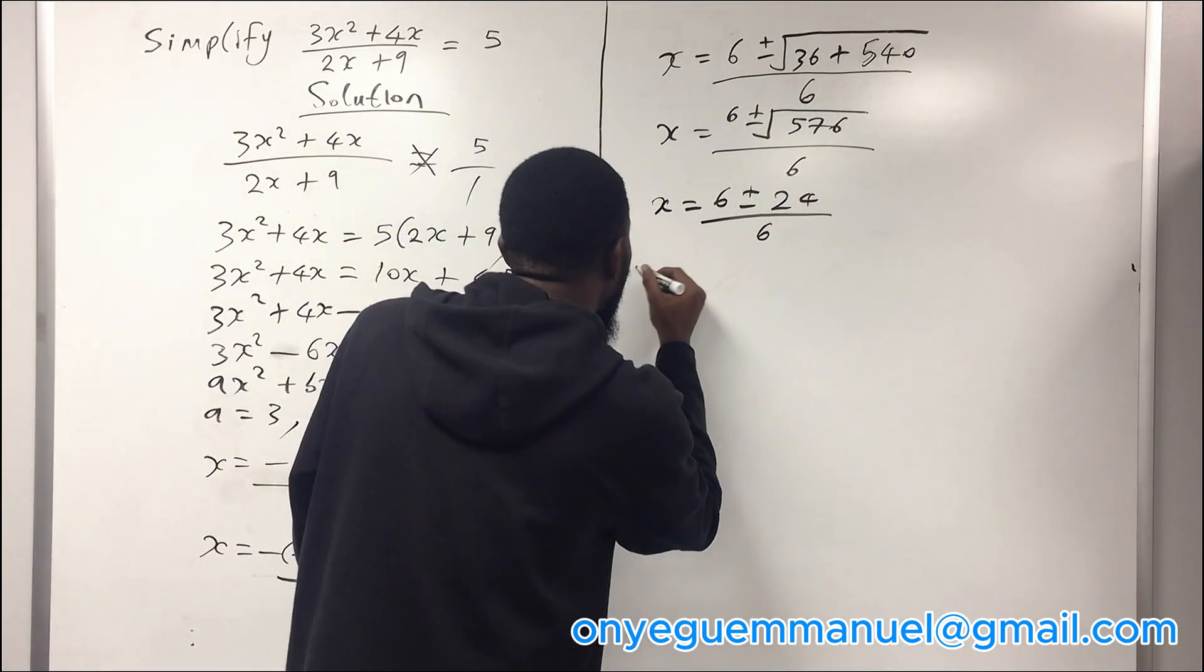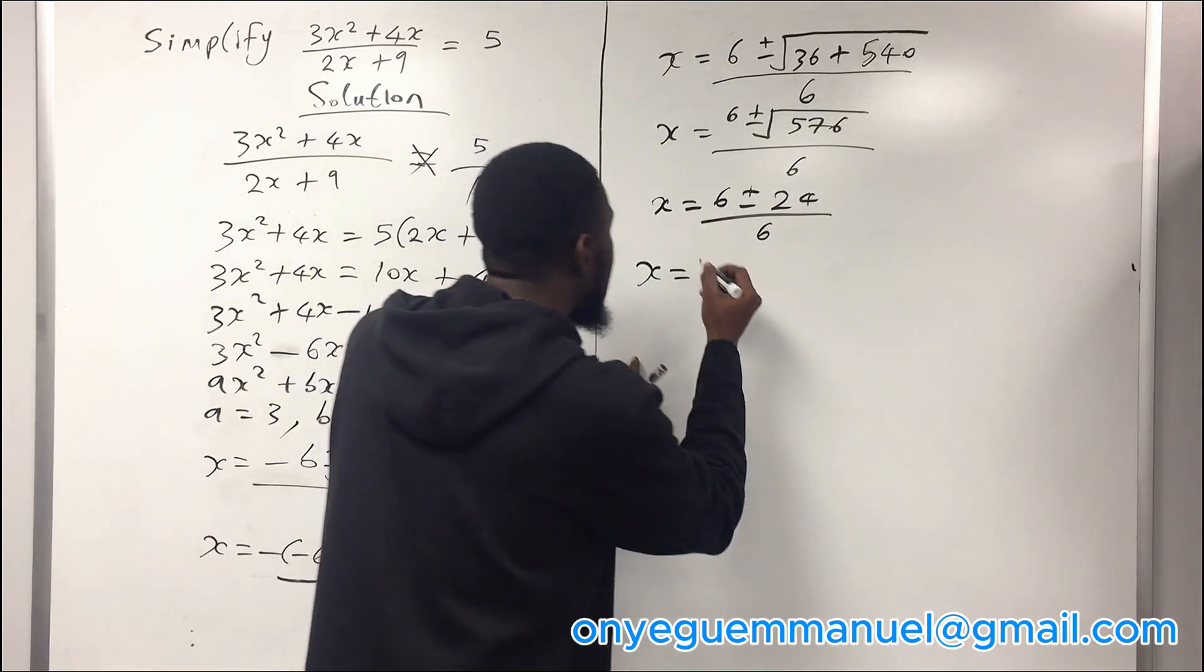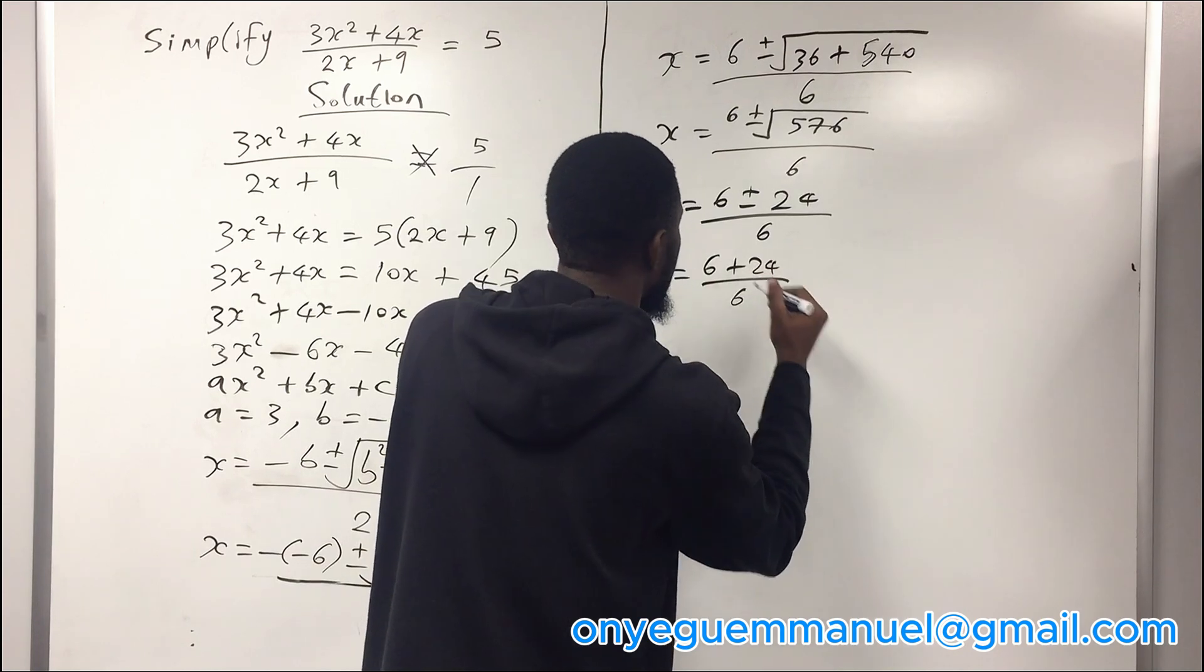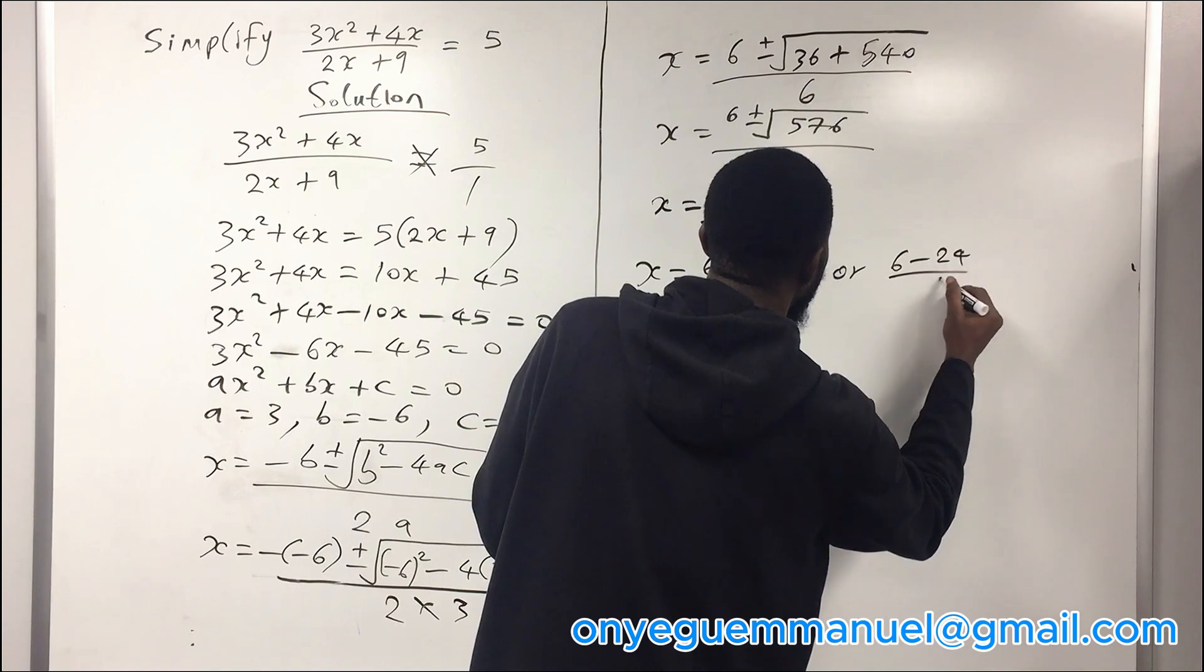So it's either you have to separate this, the plus and minus at this point. So it's either x is equal to 6 plus 24 over 6, or is equal to 6 minus 24 over 6.